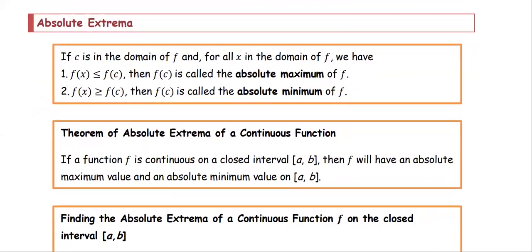Absolute extrema means both absolute maximum and absolute minimum. If c is in the domain of the function f, and for all x in the domain, we have f(x) less than or equal to f(c), then f(c) is called the absolute maximum of f.